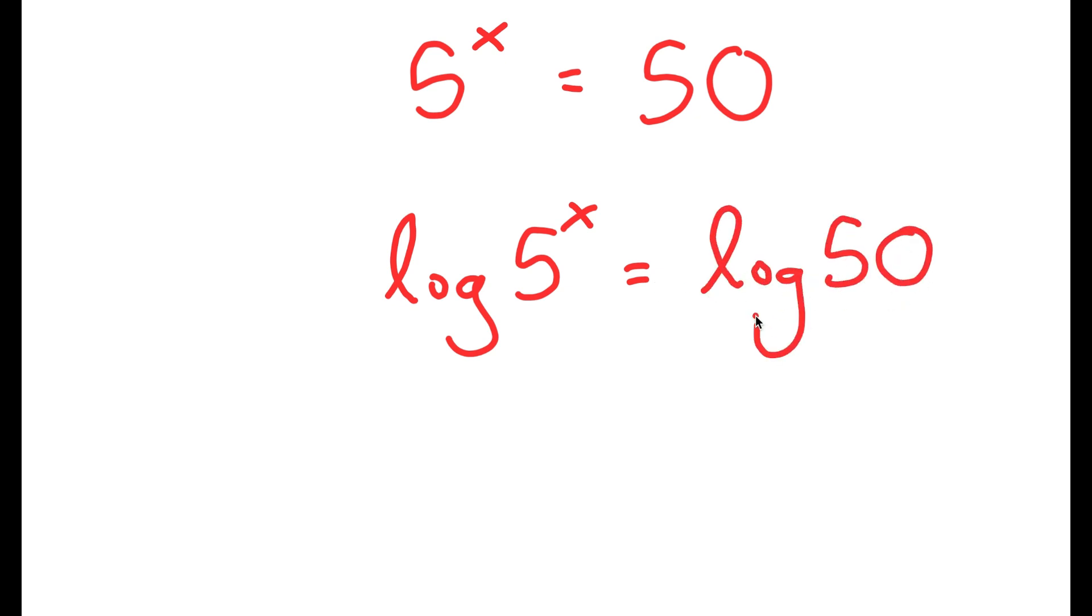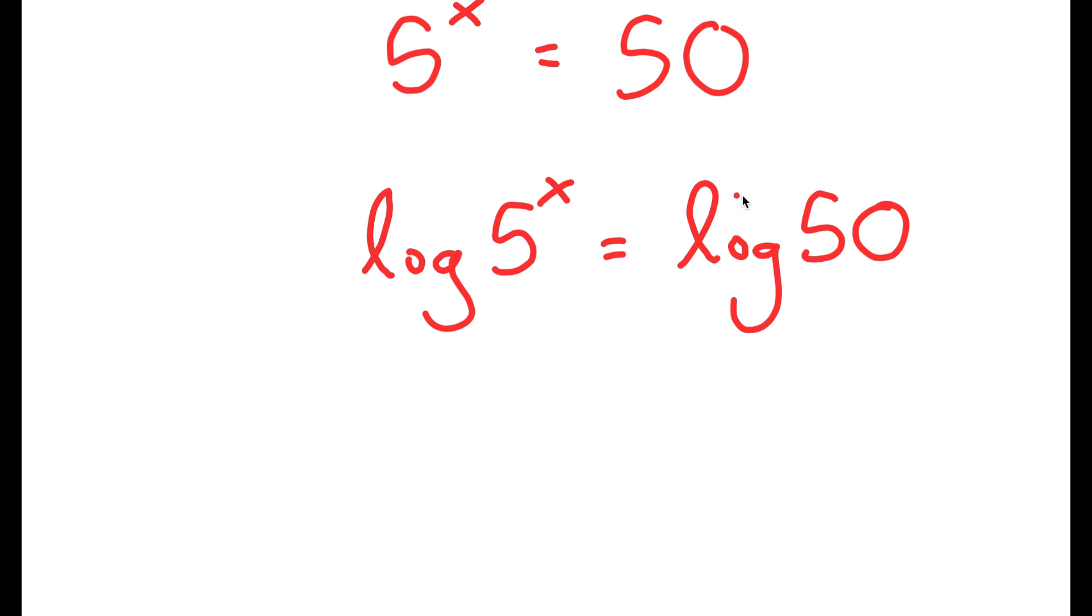And the reason I'm doing this is because logarithms come with a special property that states that if I have something in the form log a to the power of b, I can actually move the exponent b to the front, so this turns into b times log a.